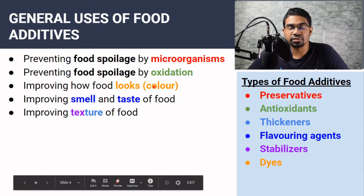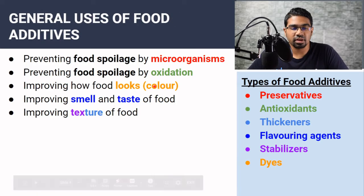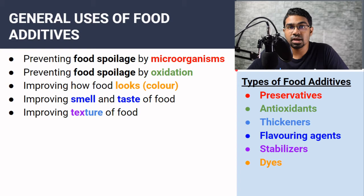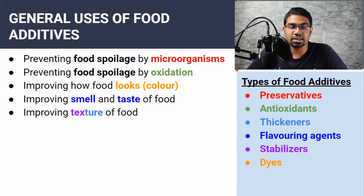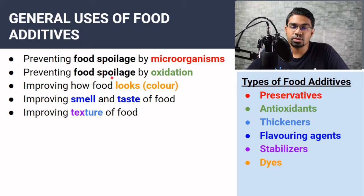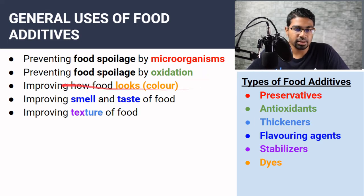General uses of food additives: first, to prevent food spoilage by microorganisms — this is the most common reason. We don't want the food to get spoiled; we want it to last. Food spoilage also occurs by oxidation, not only by microorganisms. We'll get into that later.